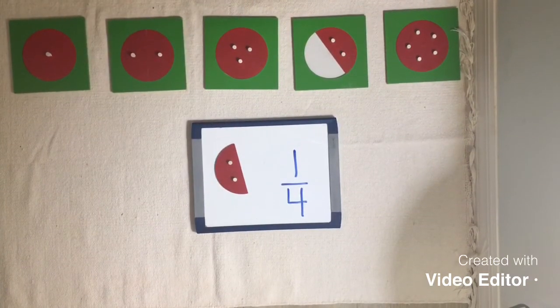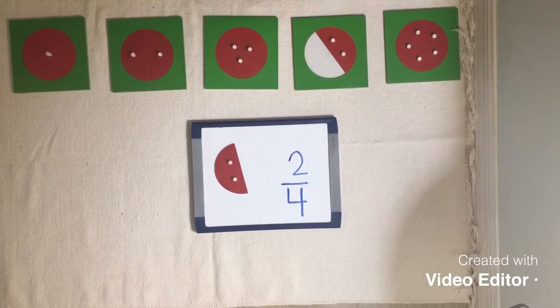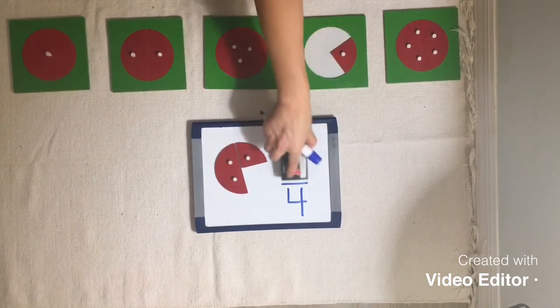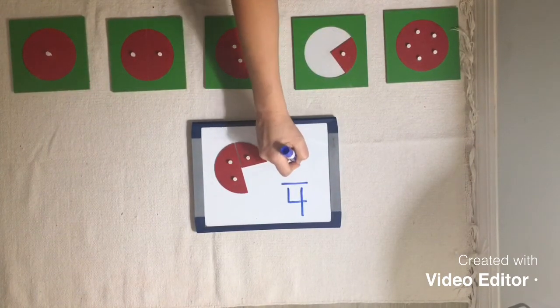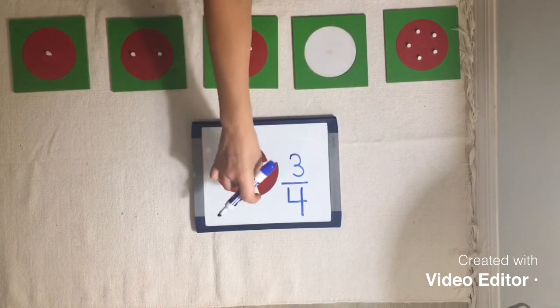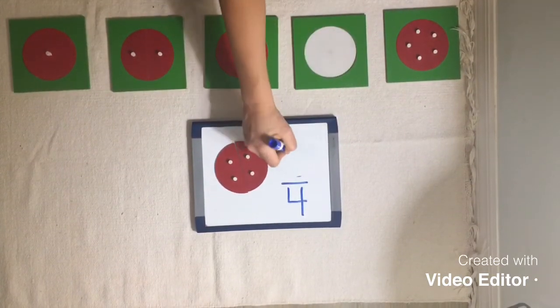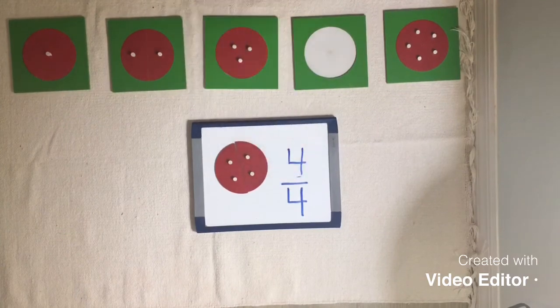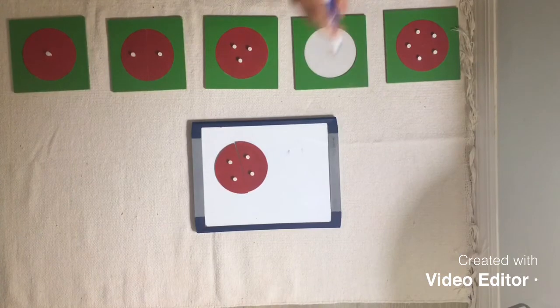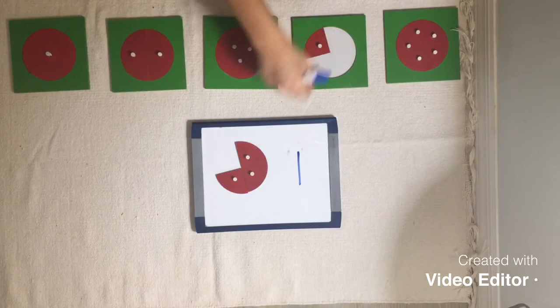Two quarters. Let's change the numerator. Three quarters. Let's change the numerator again, but the denominator stays the same. Four quarters. But now that all of the four equal parts are back together, we know that this is now actually one whole. All right, let's put our quarters away.